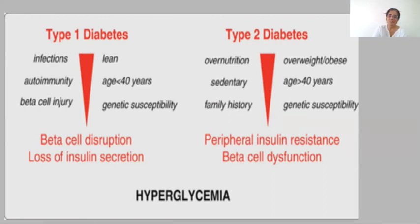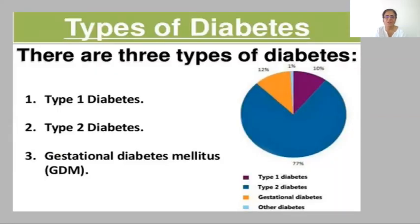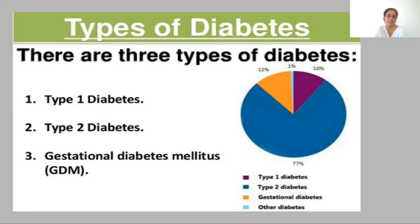There is one more type of diabetes known as gestational diabetes mellitus. This occurs when a lady is pregnant. It is a matter of concern because babies tend to be born with excessive weight. That is why ladies are always screened for diabetes mellitus during pregnancy. Once the baby is delivered, the mother will typically no longer be diagnosed as diabetic, but she does stand a chance of developing diabetes later in life.